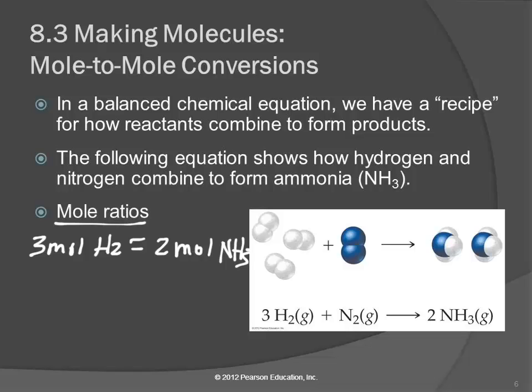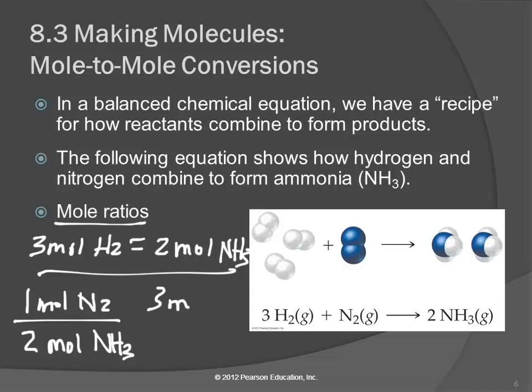We might also be interested in the relationship between nitrogen and ammonia. We can write it out this way, as this equals that, or we can write it out in a form that looks more like a conversion factor. We could say that there's one mole of nitrogen gas per two moles of ammonia, or we could say three moles of hydrogen per one mole of nitrogen.